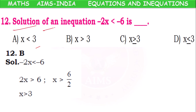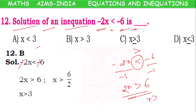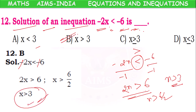Solution of an inequation: −2x < −6. Both sides have a negative symbol. To cancel it, divide both sides by −1, which reverses the inequality sign: less than becomes greater than. So 2x > 6, giving x > 3. Option B is the correct option.